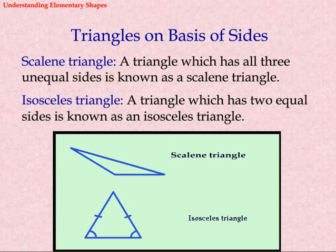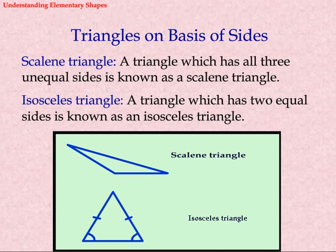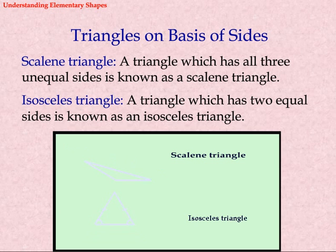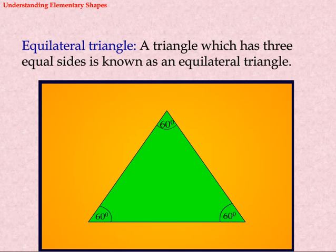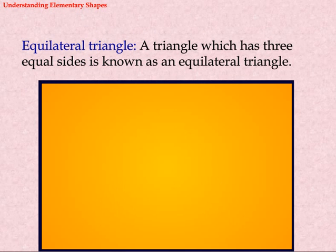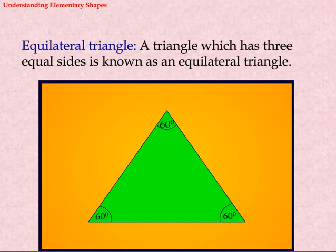Triangles on the basis of sides. Scalene triangle: A triangle which has all three unequal sides is known as a scalene triangle. Isosceles triangle: A triangle which has two equal sides is known as an isosceles triangle. Equilateral triangle: A triangle which has three equal sides is known as an equilateral triangle.